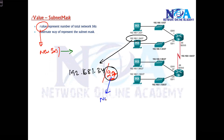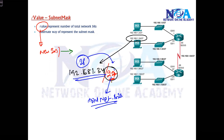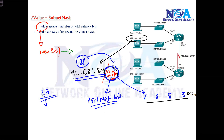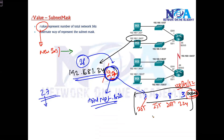Slash 27 represents the slash notation or slash value, which indicates how many total network bits the IP address has. So this IP belongs to a subnet with 27 network bits. To find the subnet mask: 8+8+8 = 24, plus 3 more bits gives us 27. The remaining bits are zero. So the subnet mask is 255.255.255 for the first three octets, and for 3 bits: 128+64+32 = 224. The subnet mask is 255.255.255.224.